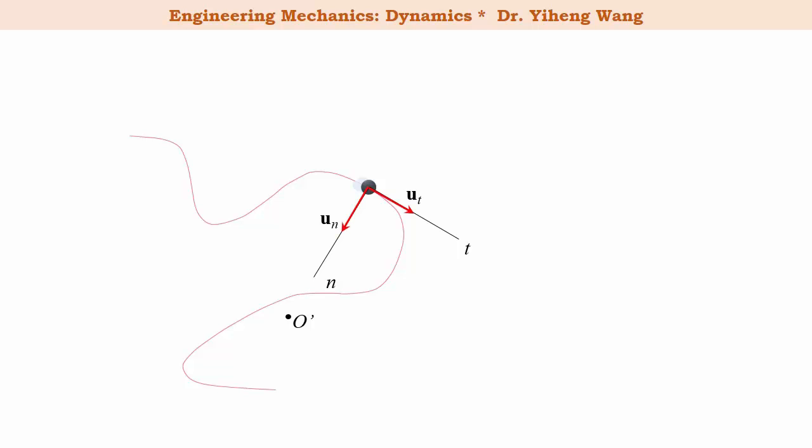Since the velocity vector is always tangent to the path, the velocity vector written in the n-t components is simply v = v·ut, with the scalar v being the speed or magnitude of the velocity, equal to ds/dt. The unit vector ut naturally indicates that the velocity is always in the direction tangent to the path.